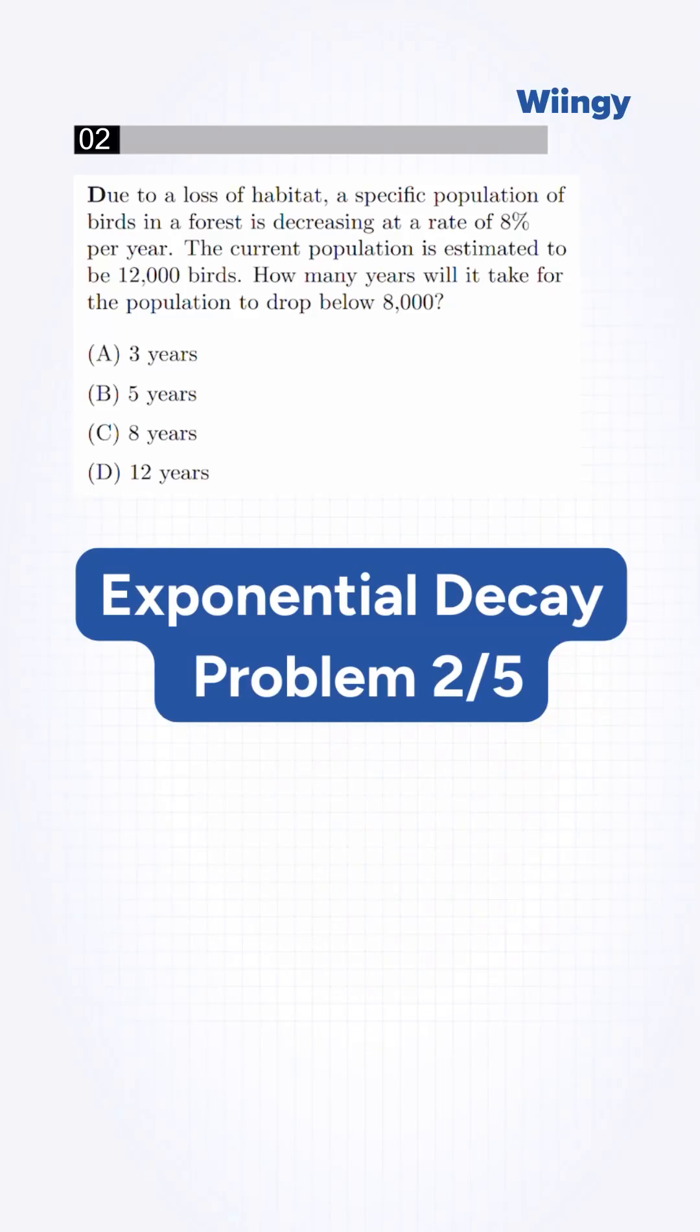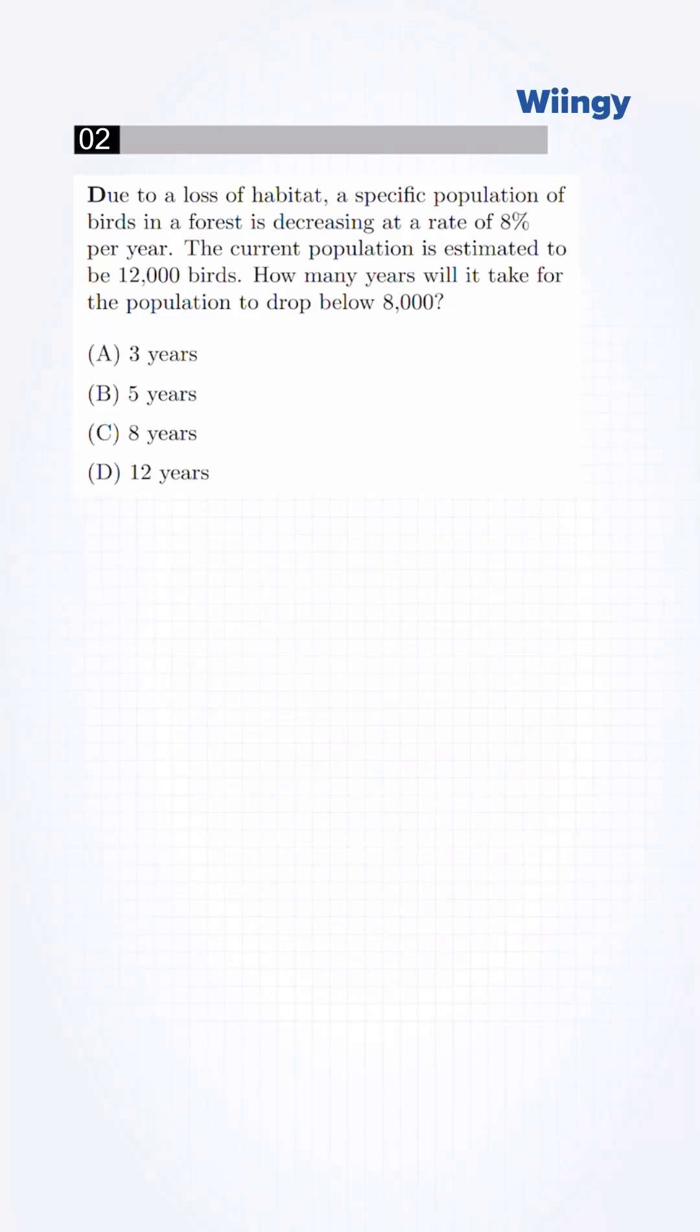Don't just plug numbers in. First recognize that this is about exponential decay over time. A specific population of birds in the forest decreases at the rate of 8%. The current population is estimated to be 12,000 birds. How many years will it take for the population to drop below 8,000?